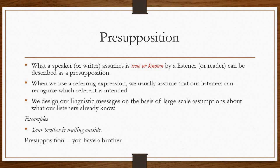When we use a referring expression, we usually assume that our listener can recognize which referent is intended. In a previous lecture when we were talking about Chomsky, 'Chomsky' didn't mean the person or scholar — it meant a book by Chomsky. So whenever you use the word 'Chomsky,' you assume your listener understands it refers to a book, not the scholar himself. That is again called presupposition.